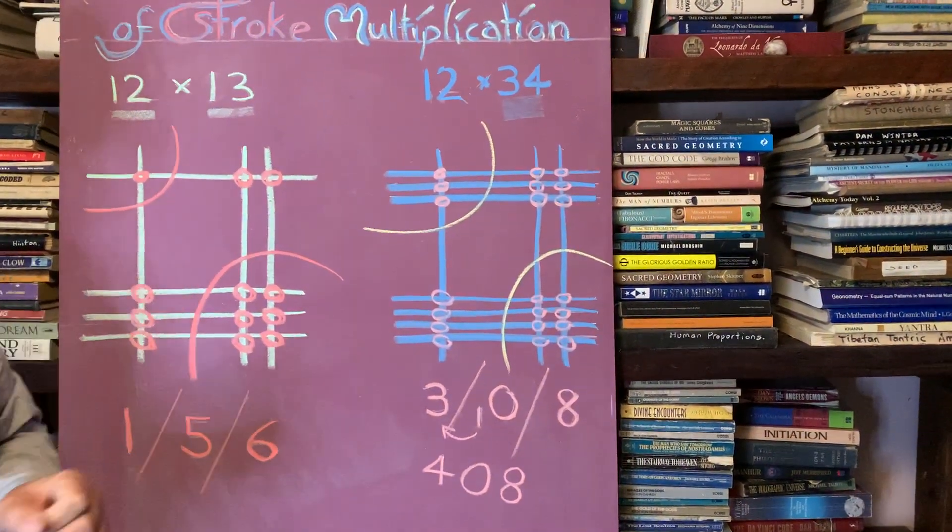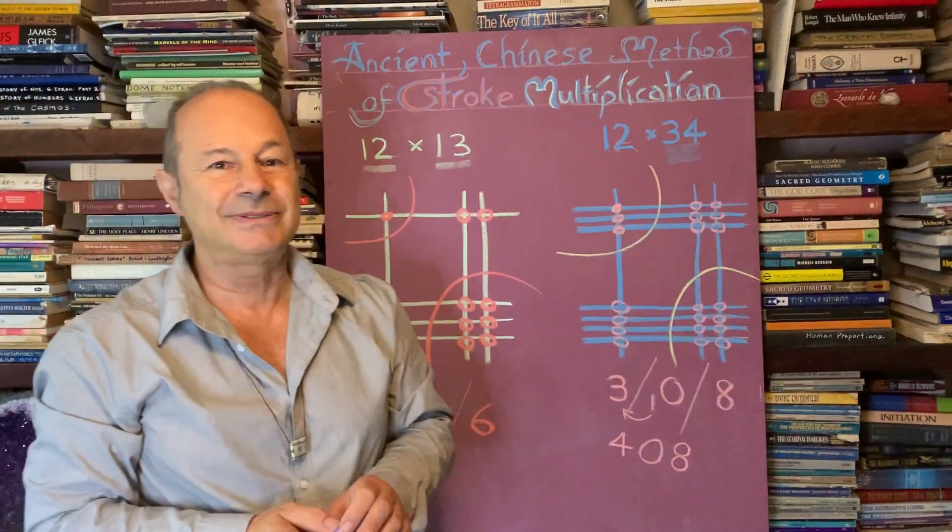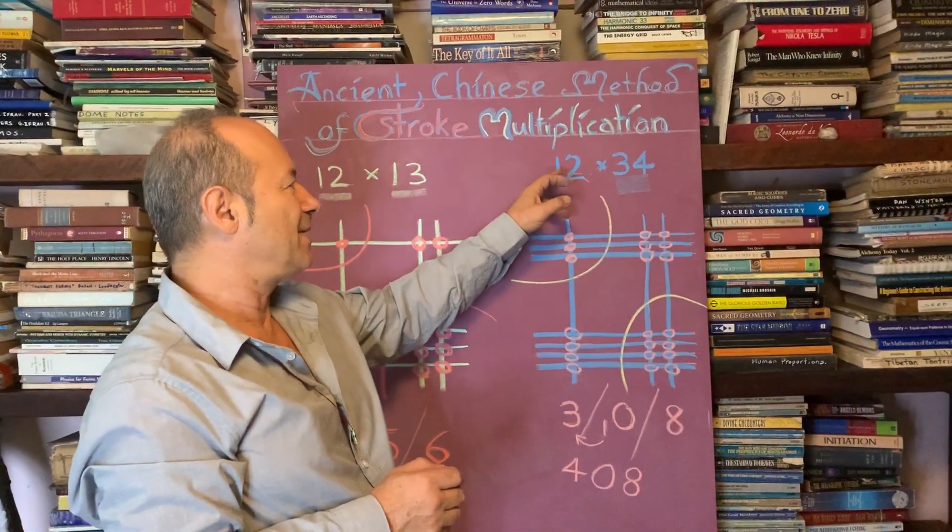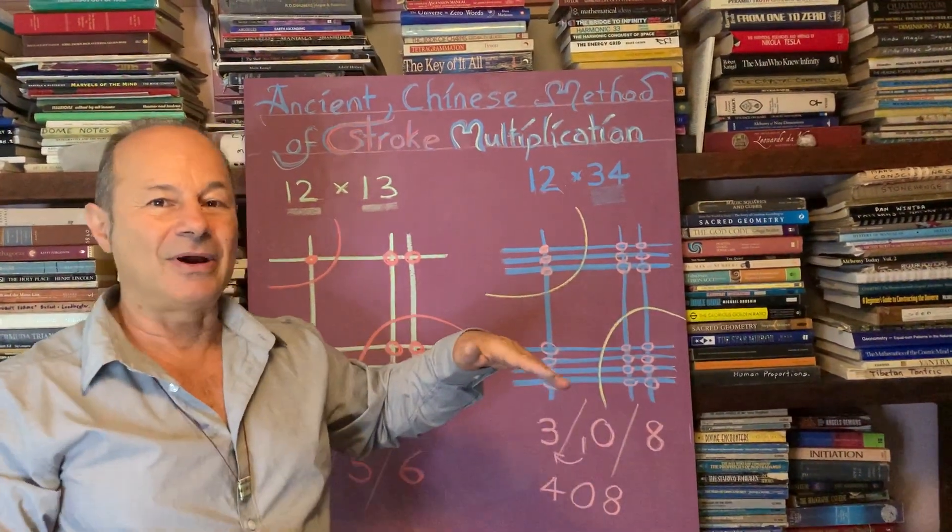Yeah. So that's a cute little method. It's definitely something you can use. Obviously, when you use big numbers, like if you were doing 37 by 49, you're obviously going to have many, many more lines.